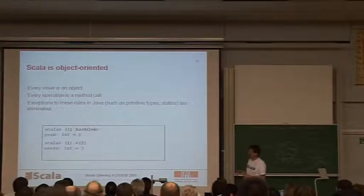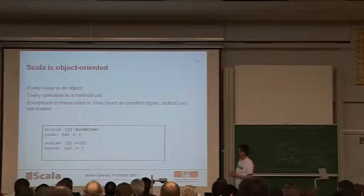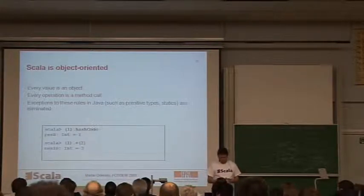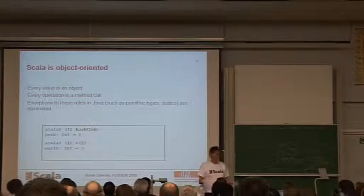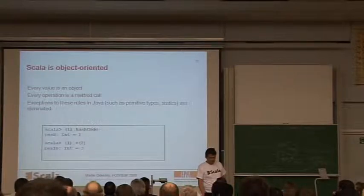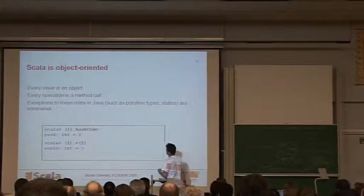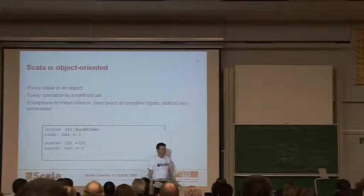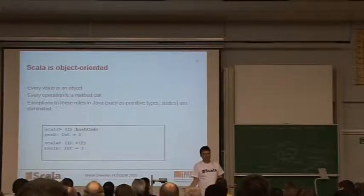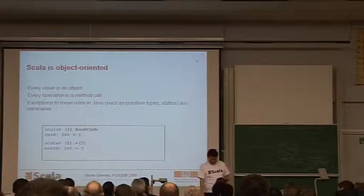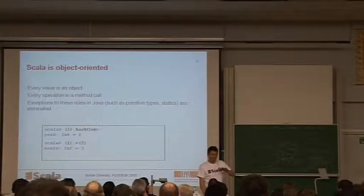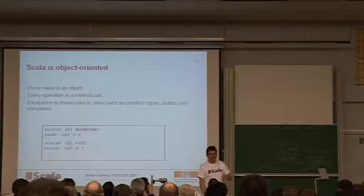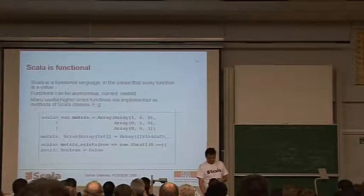So from the object-oriented side, Scala is a purely object-oriented language. So every value is an object. Every operation is a method call. And there are no exceptions to these rules. The exceptions that you find in Java, such as primitive type statics, they are eliminated. So just to make the point, if I take the hash code of the number one, then indeed I do get a hash code. In Java, that would be a type error because it says one is not an object on which you can invoke a method. Underneath the covers, of course, we implement this thing with the same 32-bit integers that Java does. We have to do it for both interoperability and performance. But on the programmer side, the programmer doesn't see that.